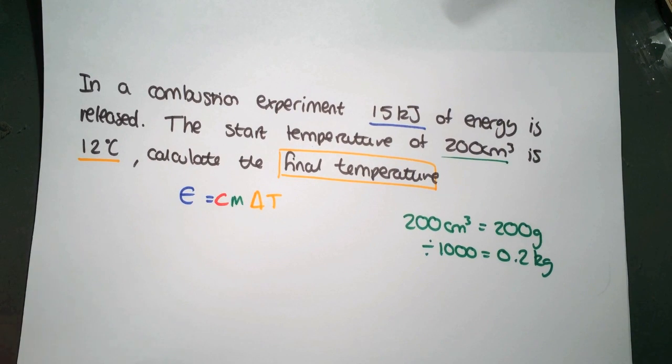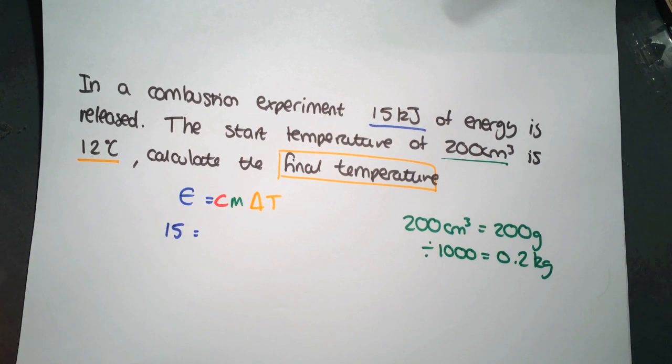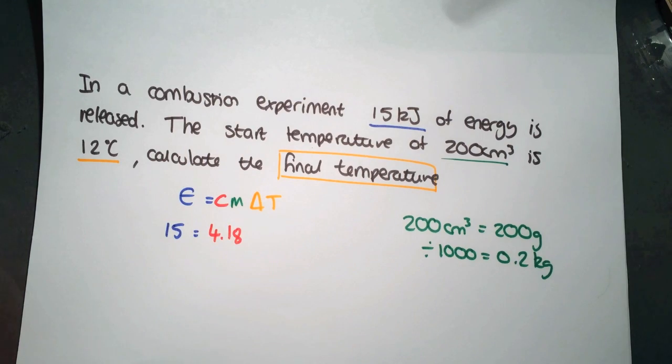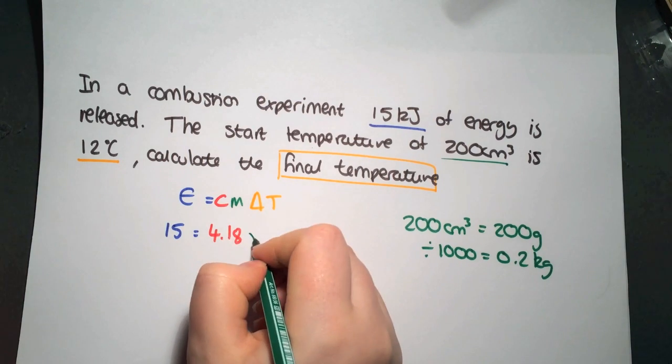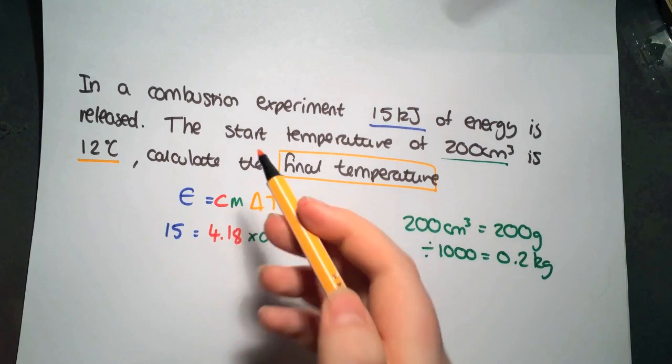We can start putting our numbers into our equation. We have 15 kilojoules is equal to 4.18 multiplied by 0.2 and this time we're just going to leave delta T as it is.